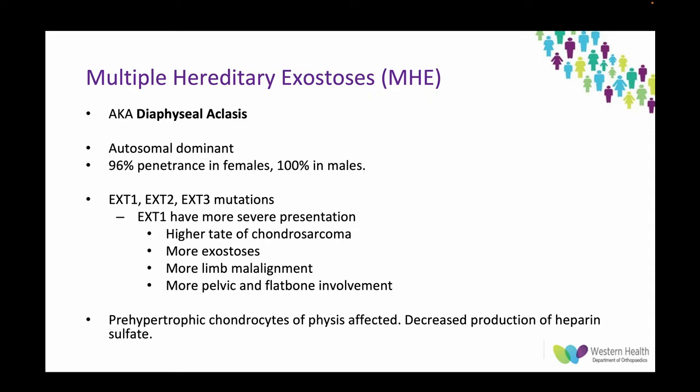Now for the more interesting stuff: multiple hereditary exostoses. In the exam this year they actually had this as a case, and one of the examiner questions was what's another name for MHE — and they were after diaphyseal aclasis, though it's not commonly referred to by that name anymore.